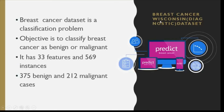Next is the Breast Cancer Wisconsin dataset. It is a diagnostic dataset in the healthcare sector and again a classification problem. Our objective is to predict whether the cancer is malignant (dangerous) or benign (not cancerous). It has 33 features and 569 instances, of which 375 are benign and 212 are malignant cases.